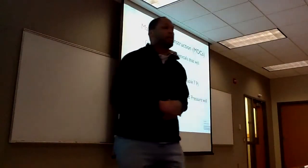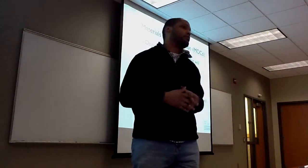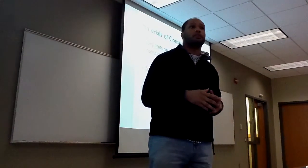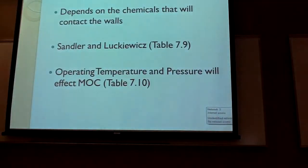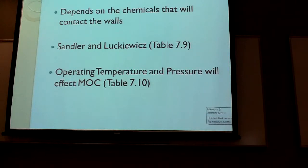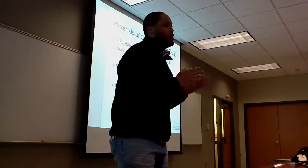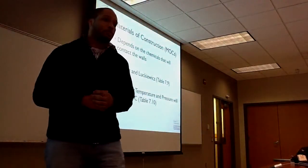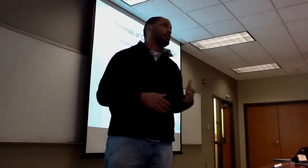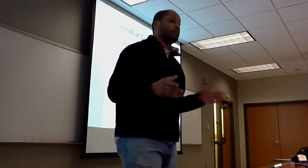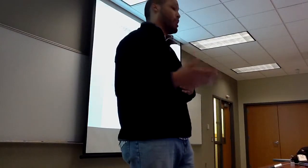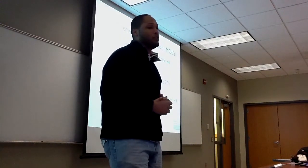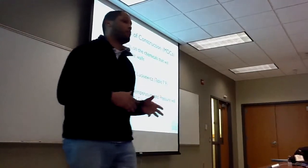The material of construction, MOC, depends on the chemicals that you will use for your plant that are contacting the walls of the equipment. Sandler and Wicks in table 7.9 came up with a process to do this. They listed various different types of chemical components, and in each column they had different types of steel materials and alloys such as nickel and titanium. They would place an A, B, C, or N, or leave it blank where not enough information was available to determine which type of material would be best for that chemical inside your plant.